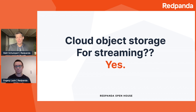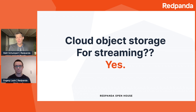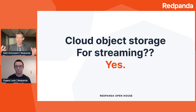First, let's level set. Red Panda has been talking about using cloud object storage for a little while now, but traditional Kafka users may not be so familiar with this concept. While cloud storage has a lot of benefits, when it comes to streaming with fairly low-latency, near-real-time, mission-critical workloads, the sensitivity to storage performance is very high. So traditionally, you don't see a lot of usage of cloud object storage — it's been all about big, locally attached storage volumes for very high performance, yet it's very expensive, particularly in the cloud.